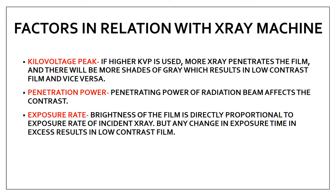The next are the factors in relation with the x-ray machine. We have a control panel with different parameters, and changes in those parameters can affect the contrast of the film. The first is kilovoltage peak (kVp): if kVp is high, the contrast of the film will be low — it is inversely proportional. If a higher kVp is used, more x-rays penetrate the film and you will have more shades of gray, which is a low contrast film. If kVp is low, contrast will be high.